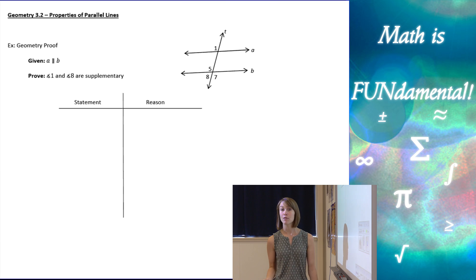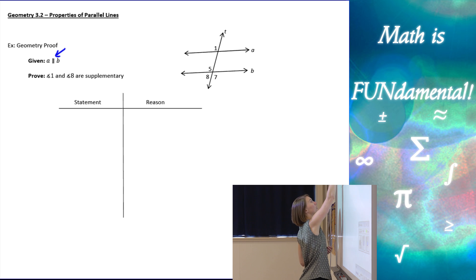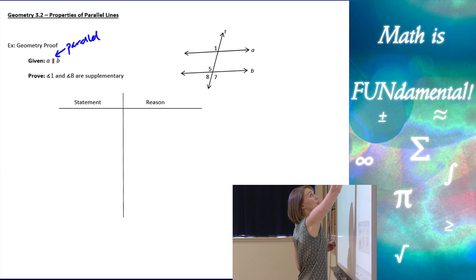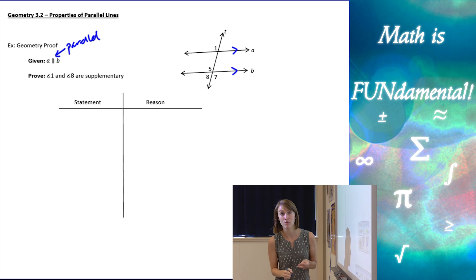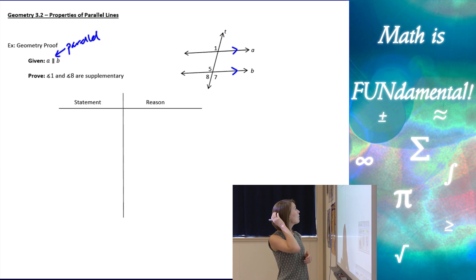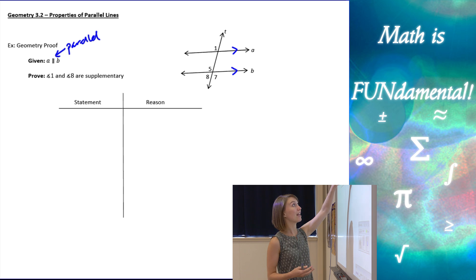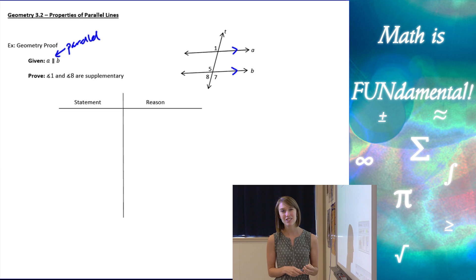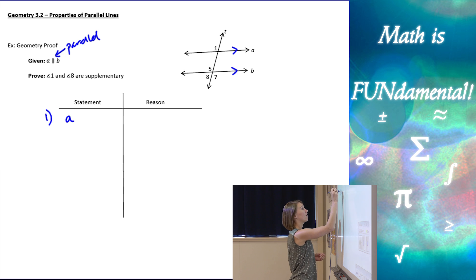Now let's use these properties to do a proof. We're given that line a is parallel to line b — that symbol means parallel. Remember, all those theorems require parallel lines. To show lines are parallel on a diagram, we use little arrow symbols, as I've just drawn. What we want to prove is that angle one and angle eight are supplementary. Angle one is obtuse and angle eight is acute, so that makes sense. However, we don't have a same side exterior angles theorem, so we'll need to work around this like a puzzle.